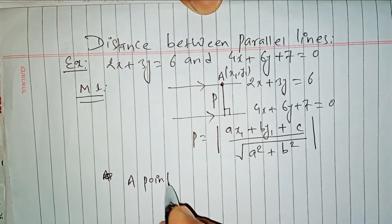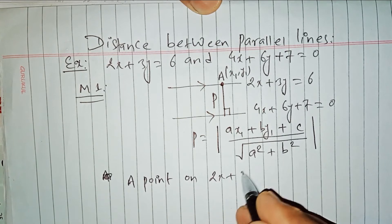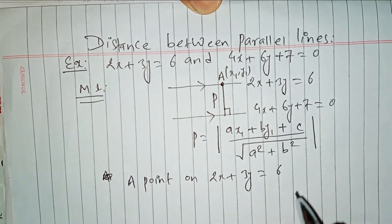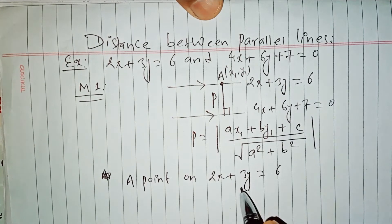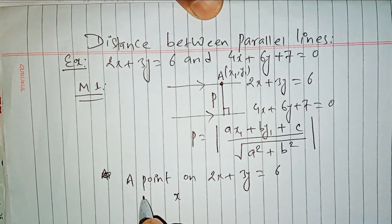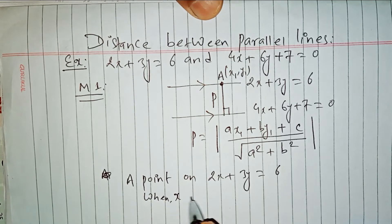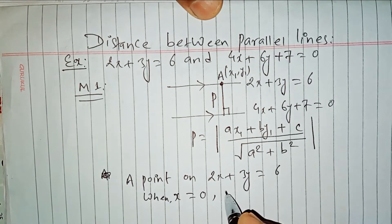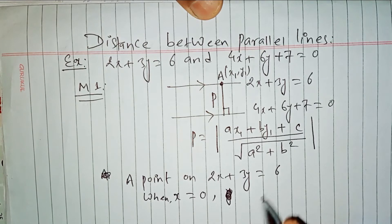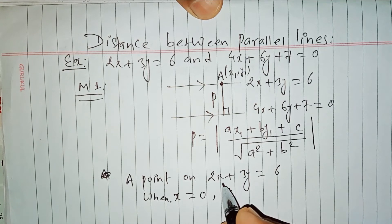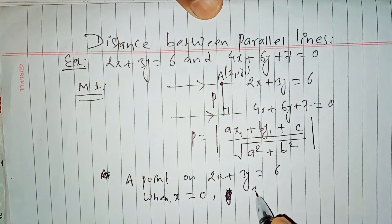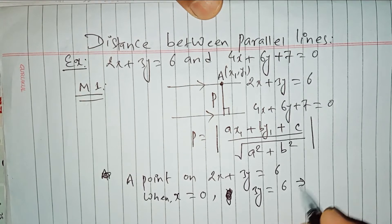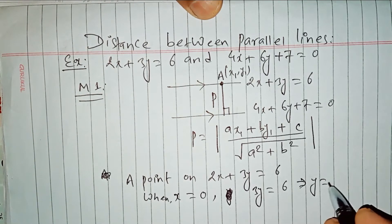Take a point on the first line 2x plus 3y equals 6. Let x equal to zero. Then 3y equals 6, which gives y equals 2. So the point on the first line is (0, 2).